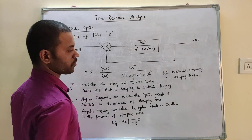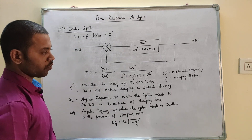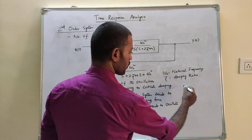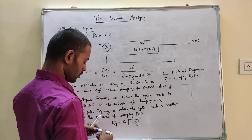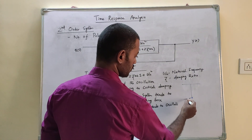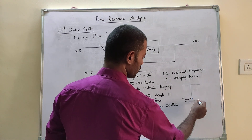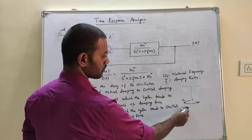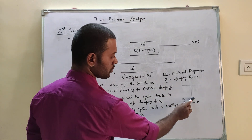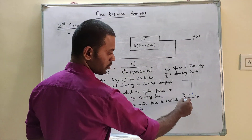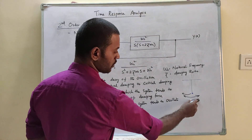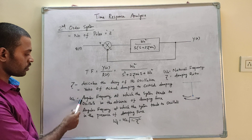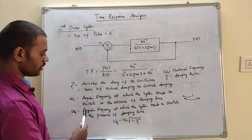Here omega_n is the natural frequency and zeta is the damping ratio. For example, consider a simple pendulum. If the pendulum is displaced and released, it will oscillate. The frequency at which it oscillates infinitely is the natural frequency. Omega_n is the angular frequency at which the system tends to oscillate in the absence of damping force.